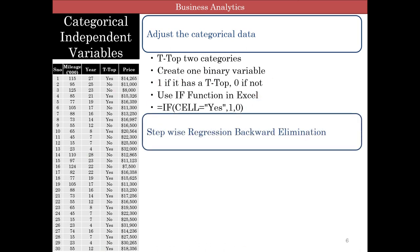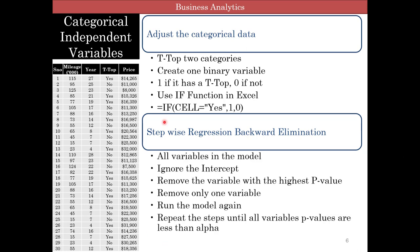Then you can use the stepwise regression with backward elimination. And the steps are, you throw in all the variables into the model. Don't worry about the intercept. Remove the variable with the highest p-value. Remove only one variable, run the model again, and repeat until all variables p-values are less than alpha. So let's go to Excel and do this in Excel.